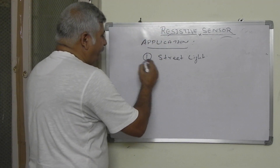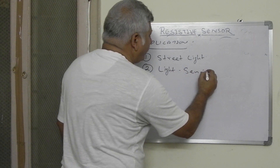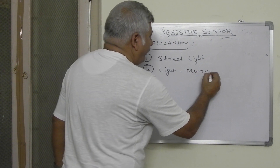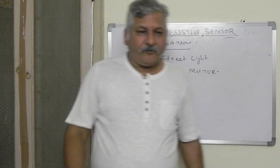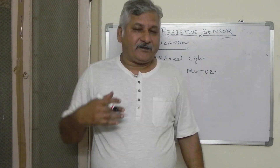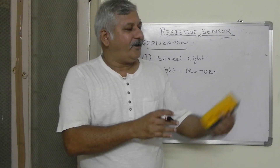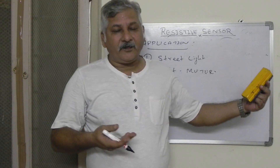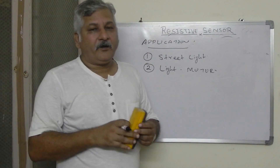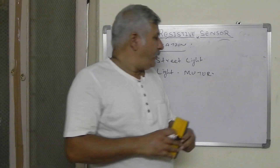Another application is a light meter. You might have seen during a cricket match that umpires, when the light is less, take out a machine and measure the brightness. In that particular device, we can use an LDR to sense the light. At the light meter, we can use LDR.